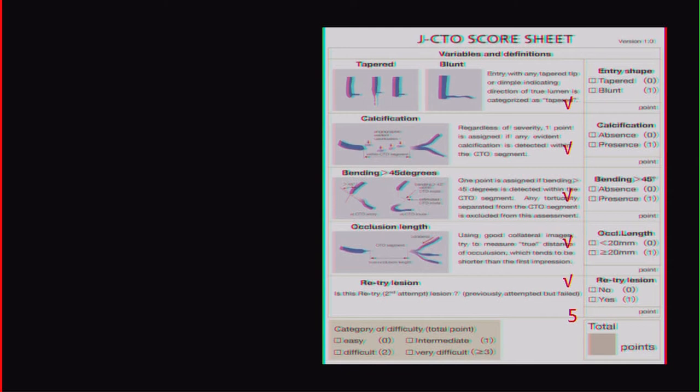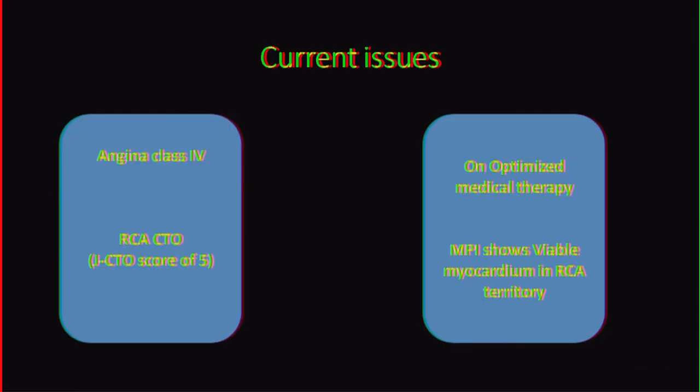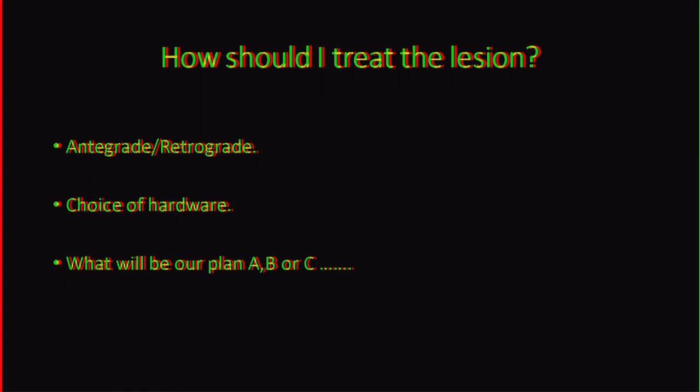J-CTO score was 5 because of two previous failed attempts. Current issue: angina class 4, RCA CTO, J-CTO score 5, on optimized medical therapy. MPI showed viable myocardium in the RCA territory. So how should I treat — antegrade or retrograde? What is the choice of hardware?